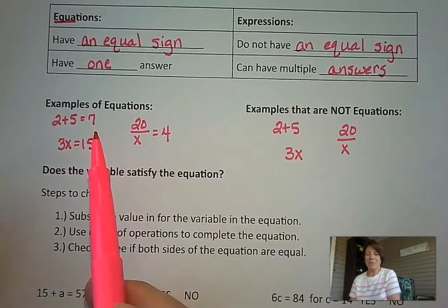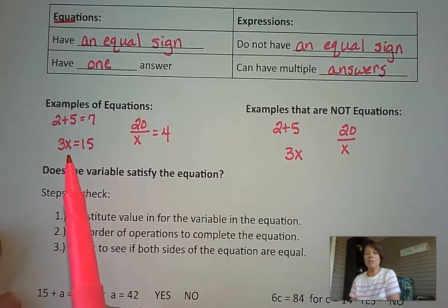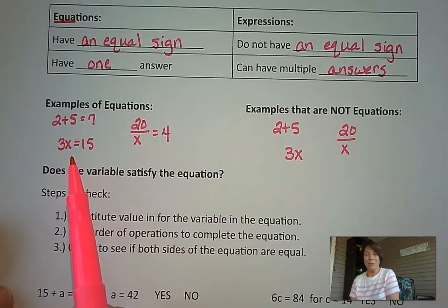Let's look down here. 2 plus 5 equals 7, that's an example of an equation. 3 times x equals 15 is an example of an equation. And there's really only one value that we can substitute in for this x to make this equation true, and I think most of you know that would be a 5.